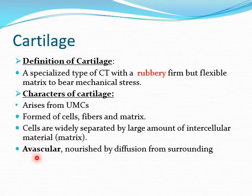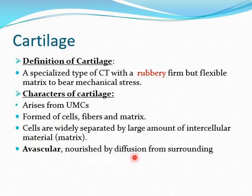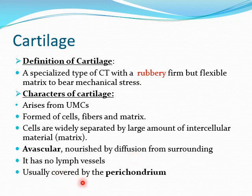Cartilage is avascular. If cartilage were vascular with blood vessels inside, any injury would heal by fibrosis, causing it to lose the mechanical stress-bearing property. The nutrition of cartilage occurs by diffusion from the surrounding connective tissue. It has no lymphocytes, and usually the cartilage is covered with a perichondrium.